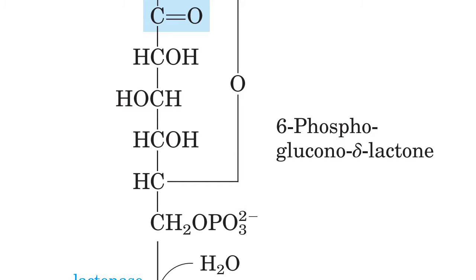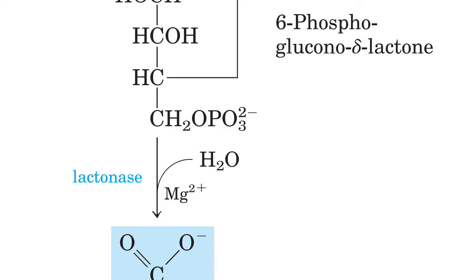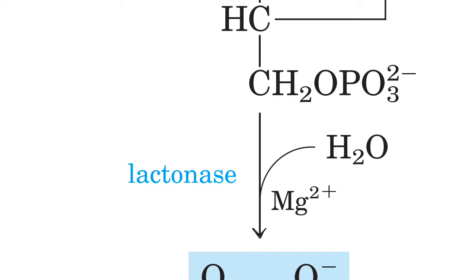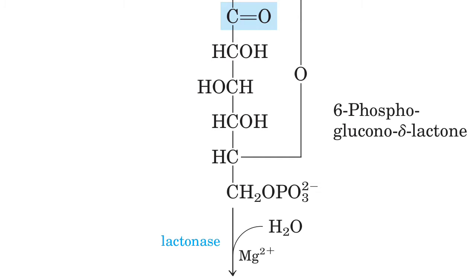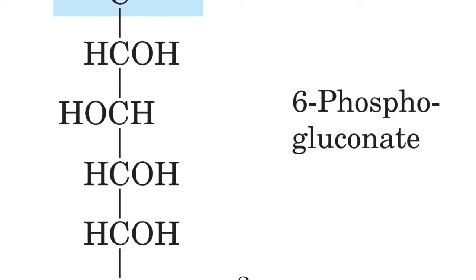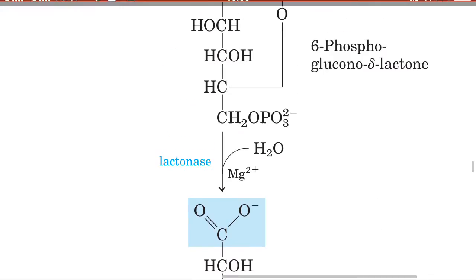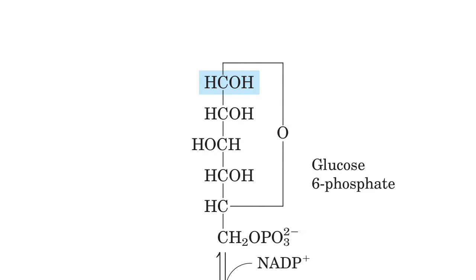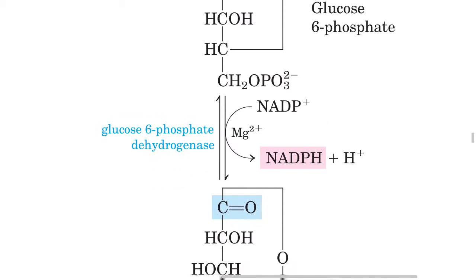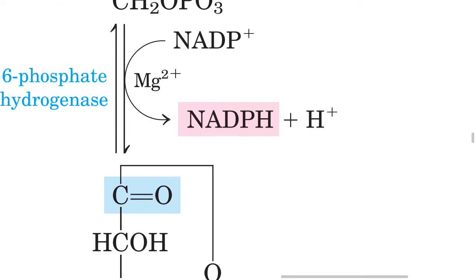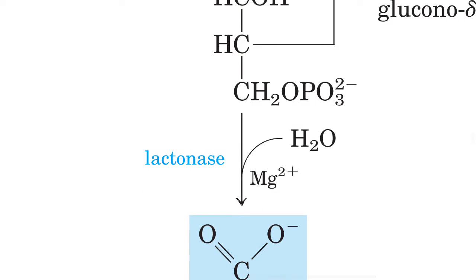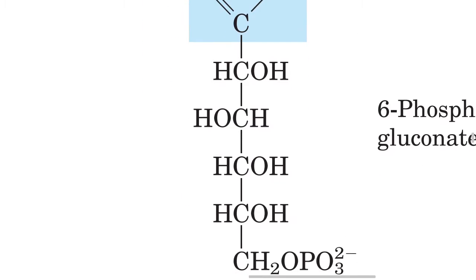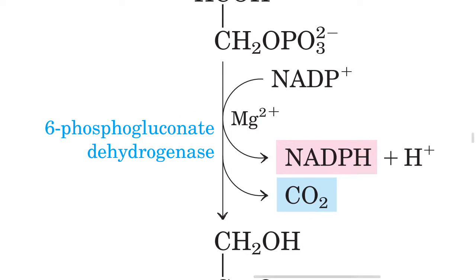6-phosphoglucono-delta-lactone then undergoes isomerization by the enzyme lactonase, which uses Mg²⁺ as a cofactor and H₂O. The lactonase enzyme breaks the ring of the delta-lactone, converting it to open-chain form, producing 6-phosphogluconate.